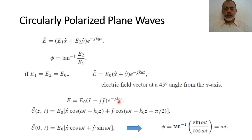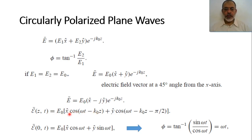To obtain the instantaneous electric field, we multiply by e to the power jωt and take the real part. So the instantaneous field as a function of Z and T would be E0 cosine(ωt − k₀z) in the X direction, plus cosine(ωt − k₀z − π/2) in the Y direction. Since cosine(x − π/2) equals sine(x), this term can be replaced by sine(ωt − k₀z).